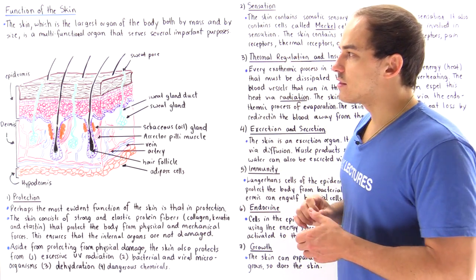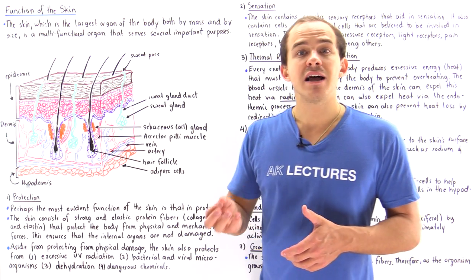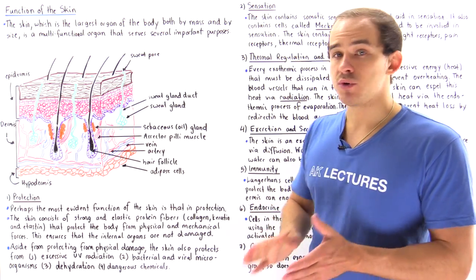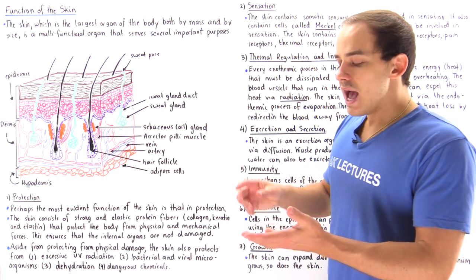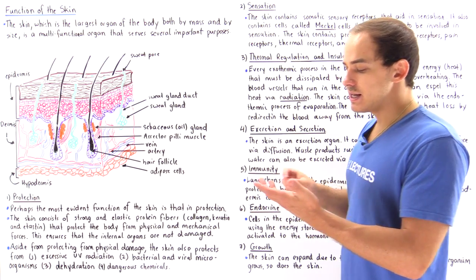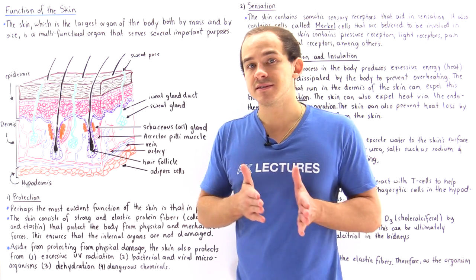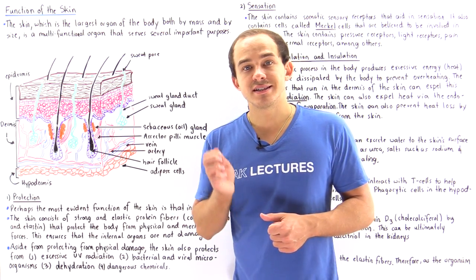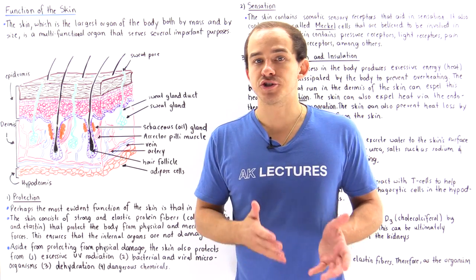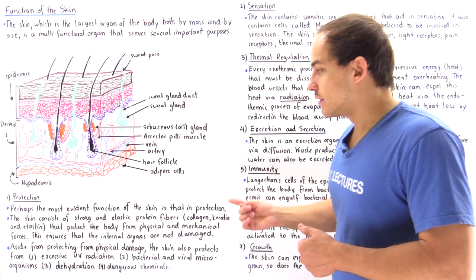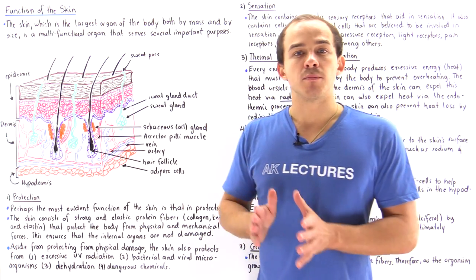Within the dermis we have a network of collagen and elastin fibers, and we also have these within the hypodermis. Together, our keratin, collagen, and elastin fibers give the skin strength and elasticity, which allows the skin to resist physical as well as mechanical pressures and forces, ensuring that our internal organs are well protected.